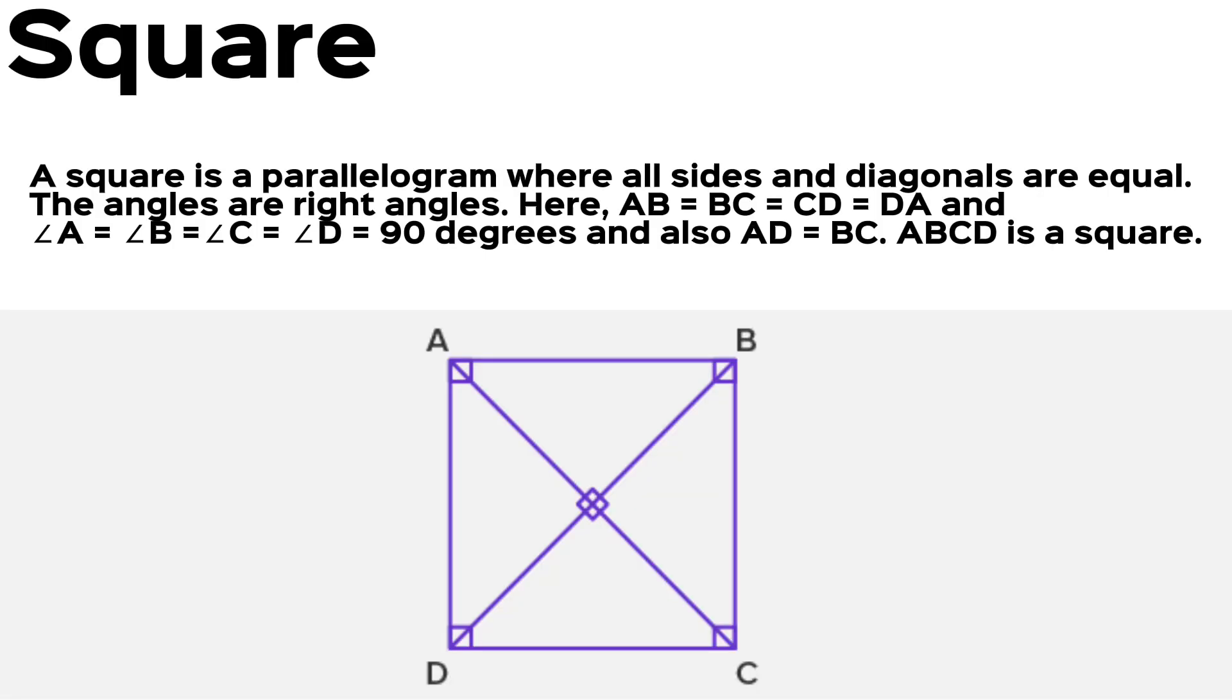Square. A square is a parallelogram where all sides and diagonals are equal. The angles are right angles. Here, AB equals BC equals CD equals DA, and angle A equals angle B equals angle C equals angle D equals 90 degrees.